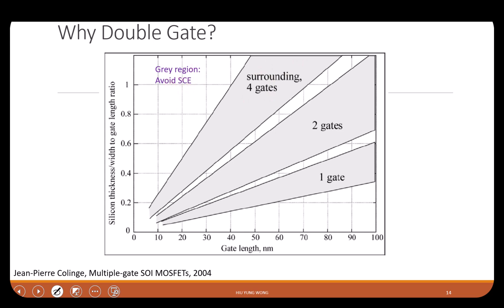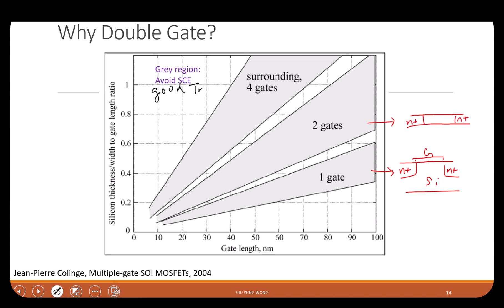If you have only one gate, that means this is an SOI transistor with N-plus, N-plus silicon and one gate. If you have two gates, it is similar to fully depleted SOI, but the top and bottom have the same gate — gate one and gate two. You use two gates to control the slab of silicon, just like pressing a water hose with two fingers in opposite directions to turn it on and off.